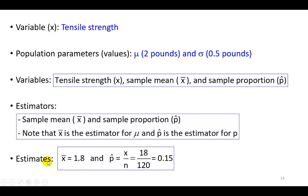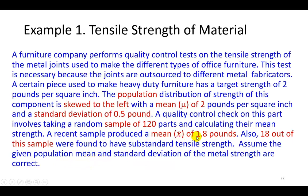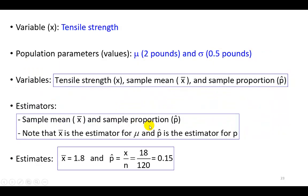The specific estimates we have in this study include the sample mean of 1.8, which, as you can see here, is given. And the sample proportion would be 18 out of 120, which comes out to be 0.15.